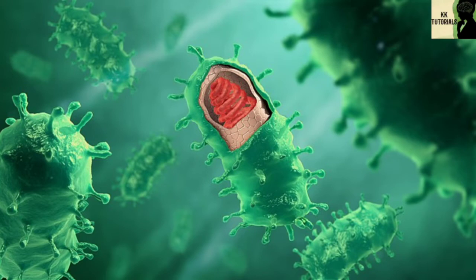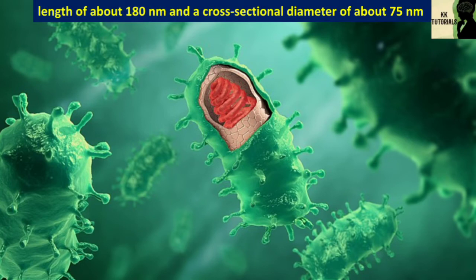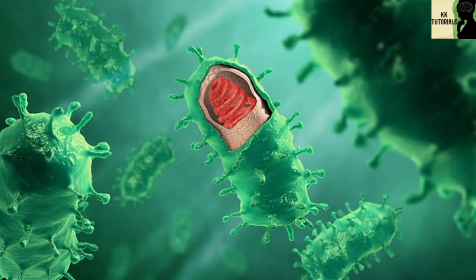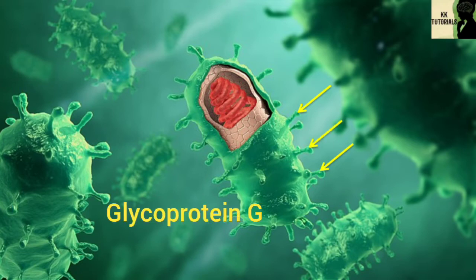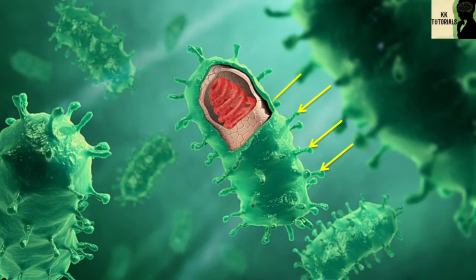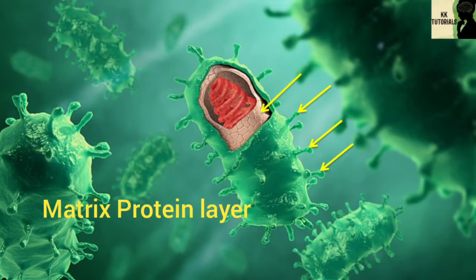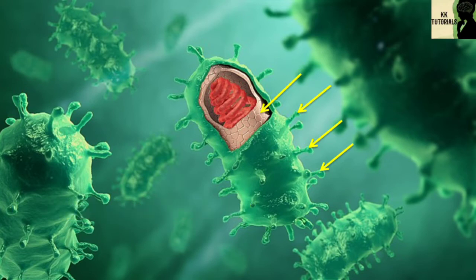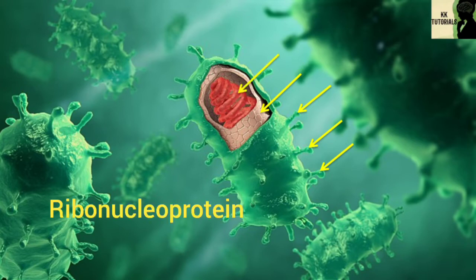The rabies Lyssavirus has a bullet-like shape with a length of about 180 nm and a cross-sectional diameter of 75 nm. The lipoprotein envelope carries knob-like spikes composed of glycoprotein G. Spikes do not cover the planar end of the virion. Beneath the envelope is the membrane or matrix protein layer, which may be invaginated at the planar end. The core of the virion consists of helically arranged ribonucleoprotein.